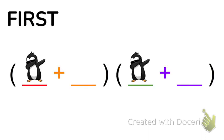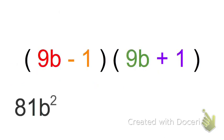F in FOIL stands for first. So we're going to multiply the first numbers in each set of parentheses. So 9b times 9b is 81b squared.